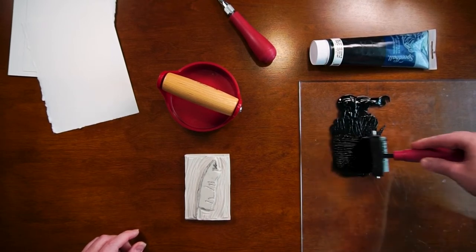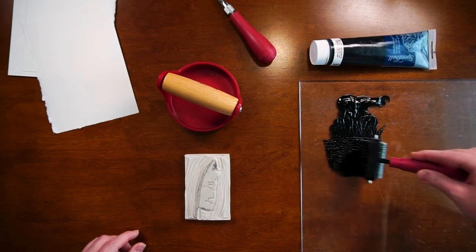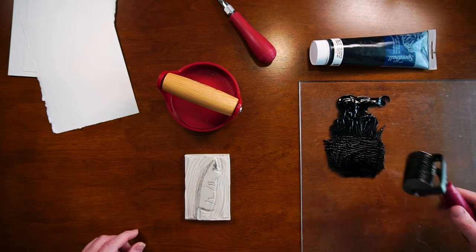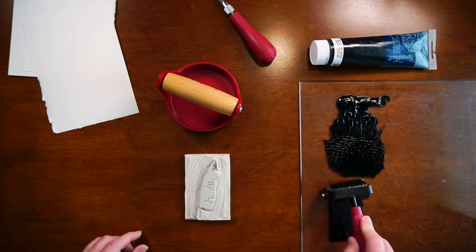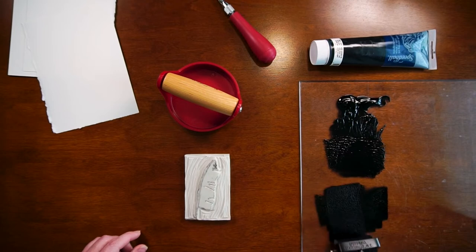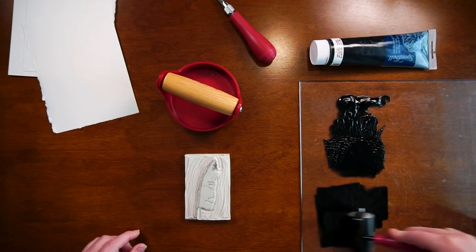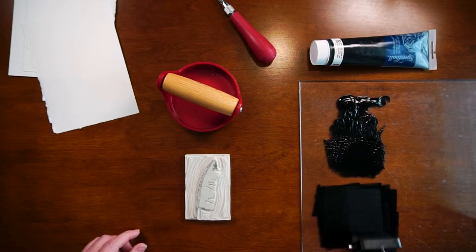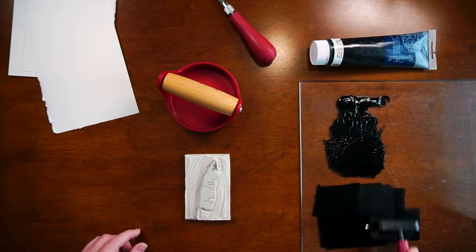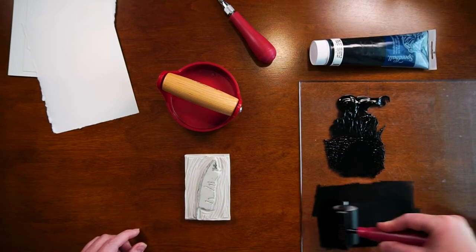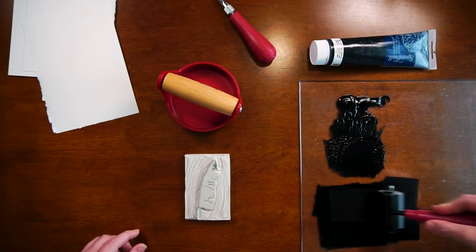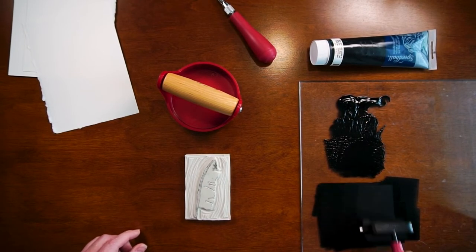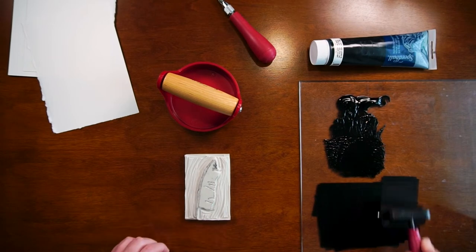Now I've got far more ink than I'll possibly use, way too much. But I fully covered the brayer and now I just moved to a different spot on my piece of plexiglass. You're going to spend a little bit of time just kind of rolling it. This is something that when you're brand new it takes a little bit of just kind of getting to know your ink and how it works.